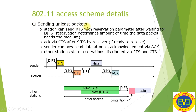Access scheme details for sending unicast packets with RTS/CTS: the station sends RTS with reservation parameters after waiting for DIFS. The reservation determines how long the data packet needs the medium. The receiver sends CTS after SIFS. The sender then transmits data, followed by acknowledgement (ACK). The sequence is: DIFS → RTS → SIFS → CTS → data transmission → acknowledgement. RTS means Request to Send; CTS means Clear to Send.